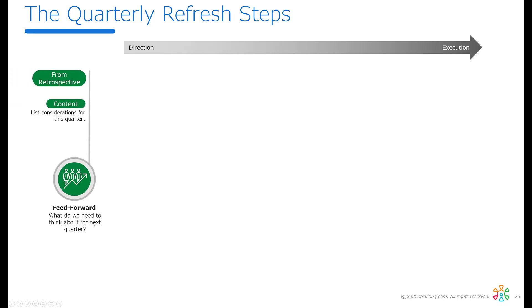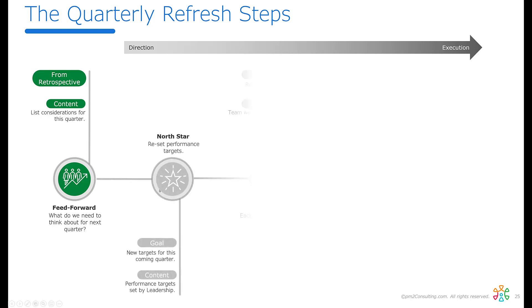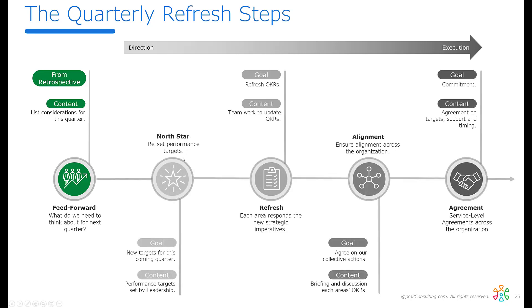The input is two things. One is the feed forward that comes from the end of the retrospective. And then secondly — and I recommend this is literally the next day — the leadership team tells us what that North Star is. Based on the North Star, we then do a refresh, alignment, and agreement.